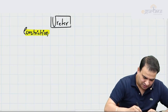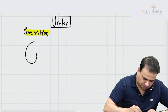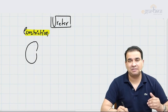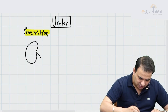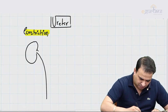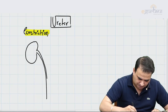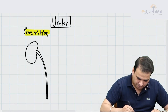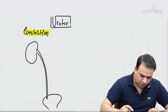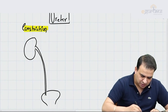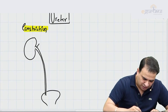Anatomically, there are three major constrictions of the ureter. Some say there are four or even five, but anatomically there are three. The first constriction is at the pelviureteric junction — that is called the pelviureteric junction.